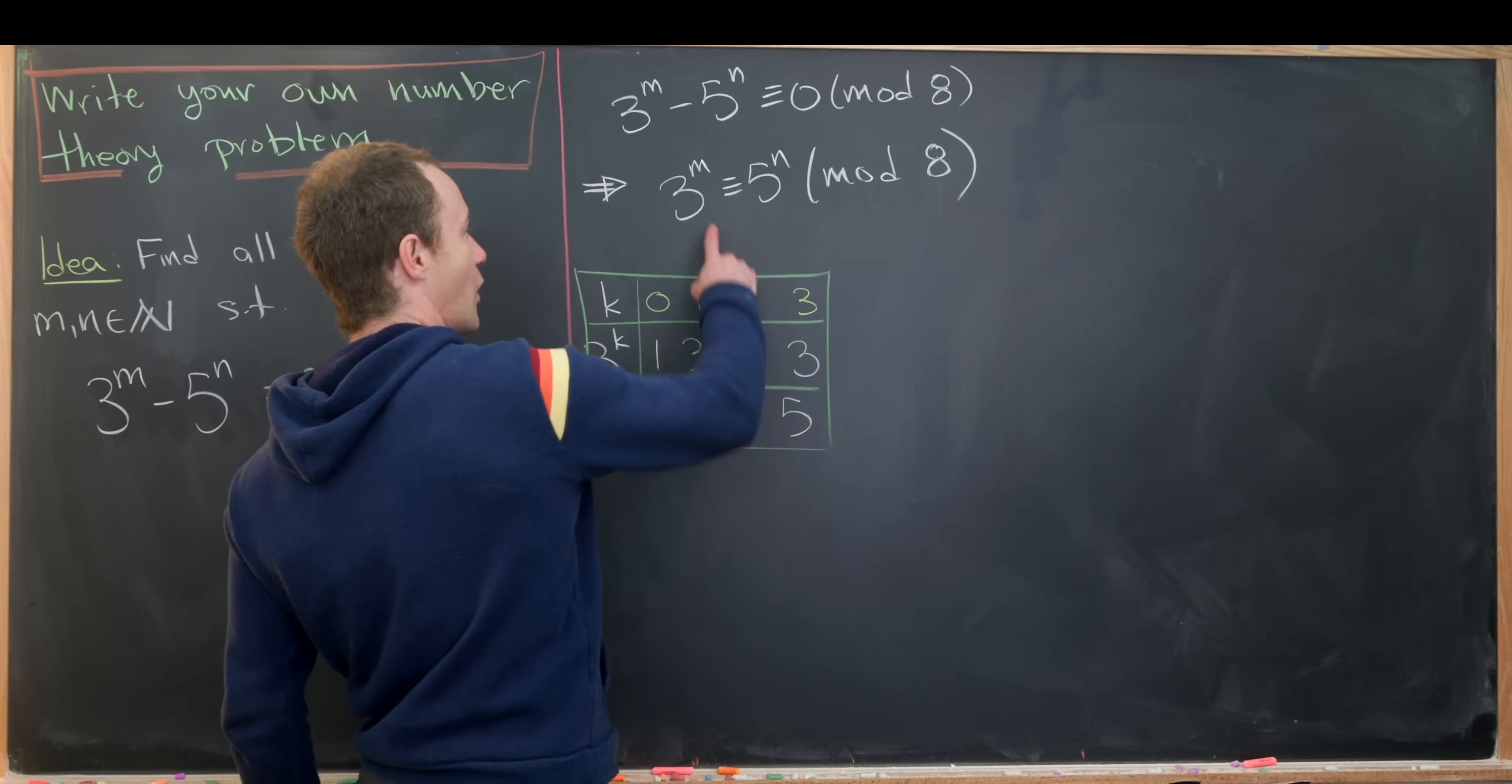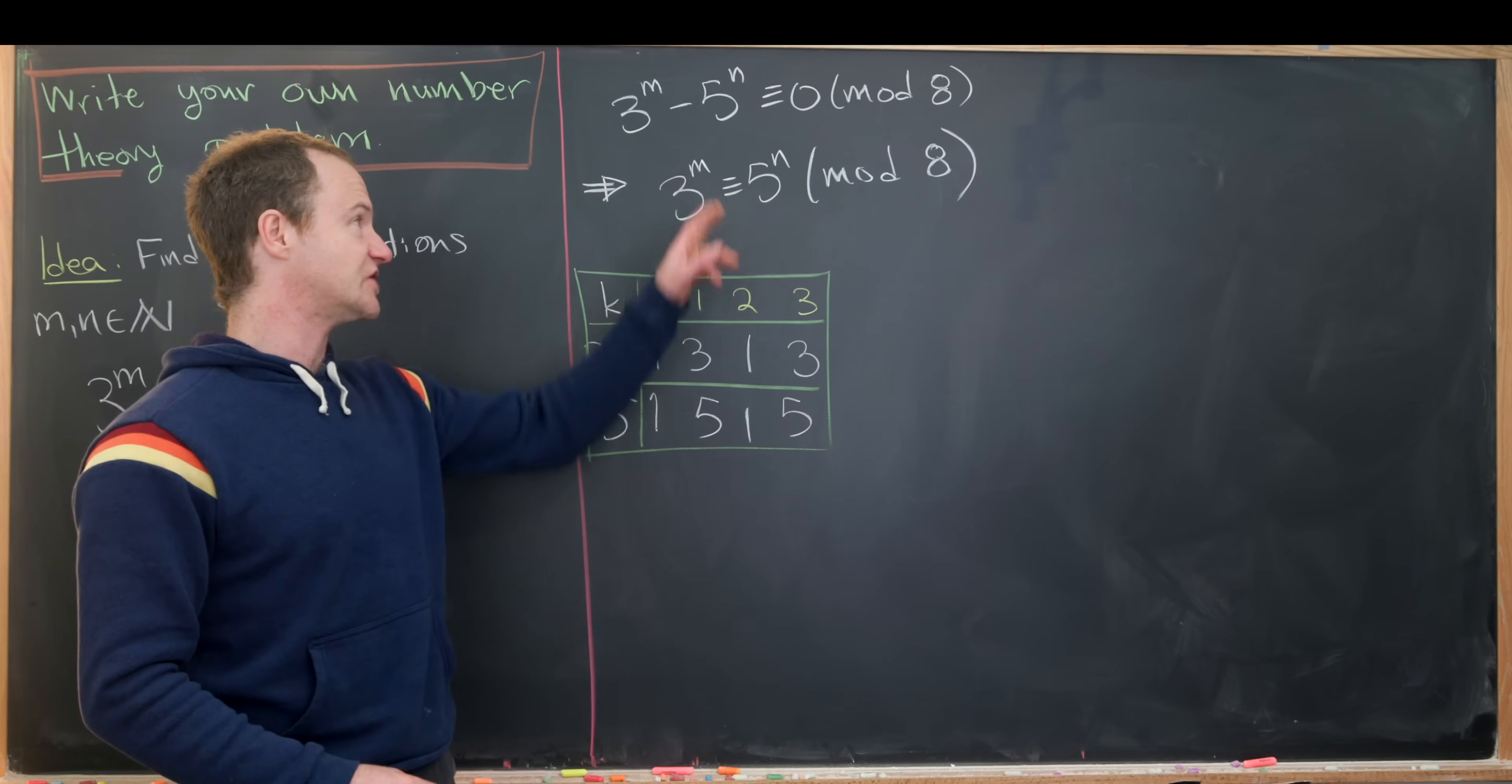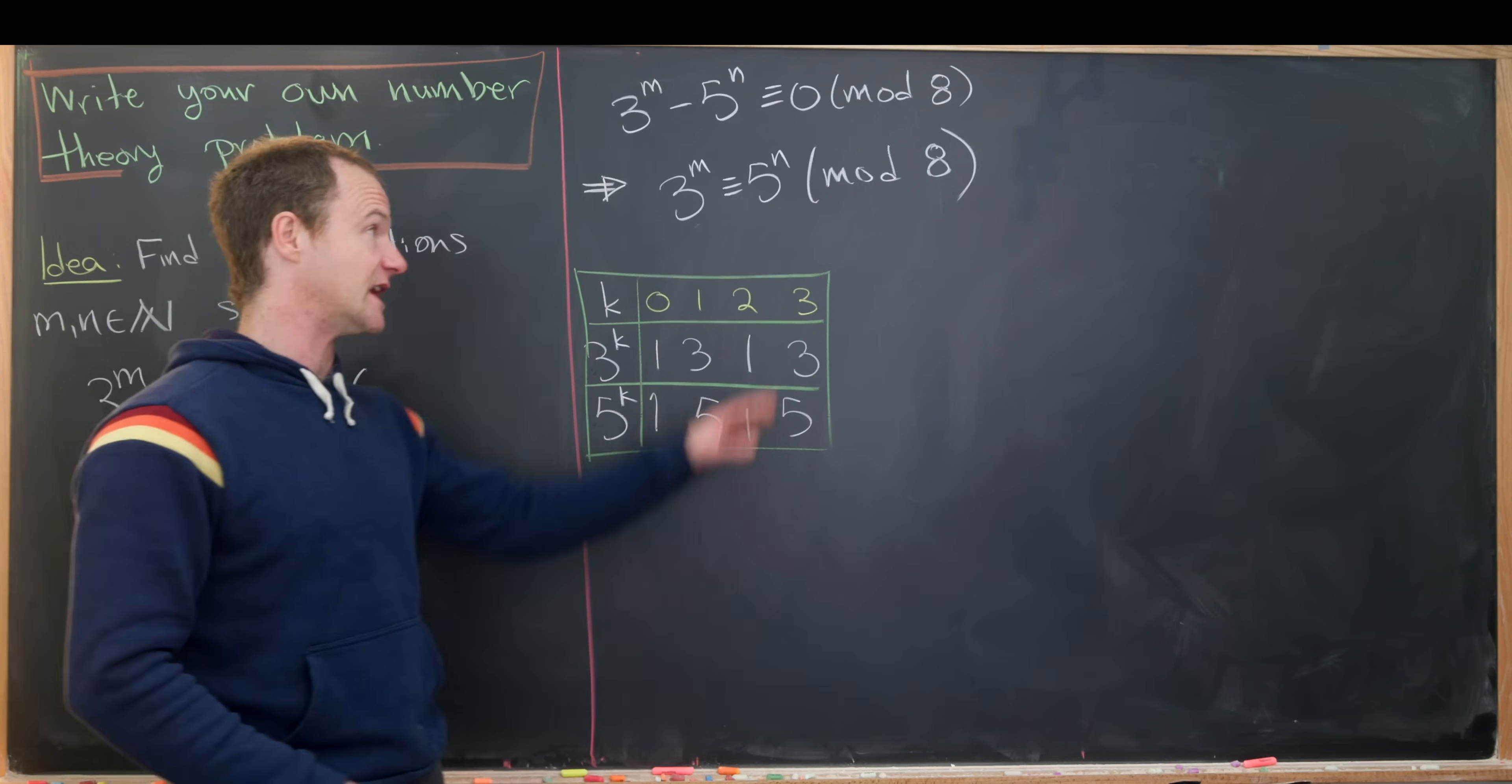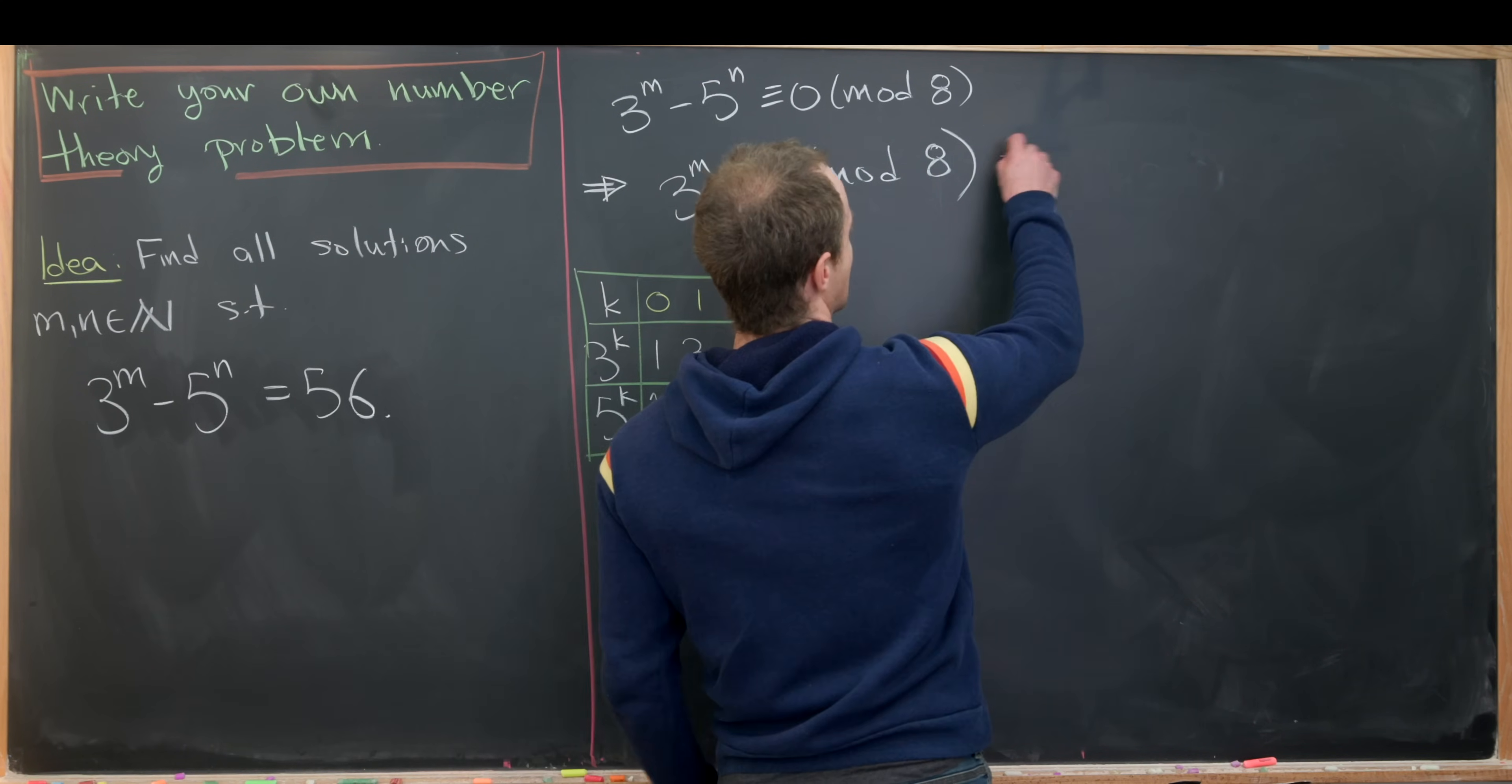Let's notice that the only time a power of 3 is equal to a power of 5 is when each exponent is even. Notice if each exponent is odd, we have 3 and 5—those are clearly not equal to each other mod 8.